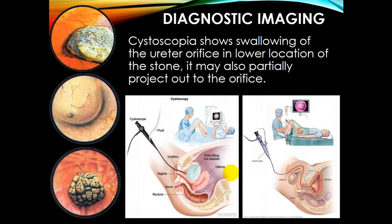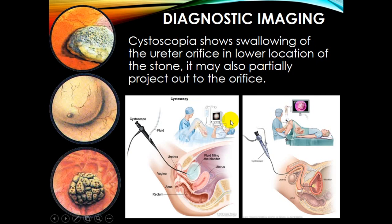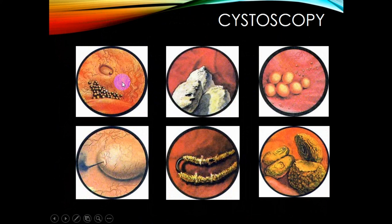Cystoscopy is another diagnostic imaging method that can show swelling of the ureteral orifice when a stone is located distally, and the stone may partially project out of the orifice. Here you can see small and larger stones in the ureter, the bladder wall, and how the cystoscope instrument is used to visualize anatomical structures. These images can show different kinds of stones — struvite, citrate, or calcium stones — along with the metallic detail associated with various stone types.